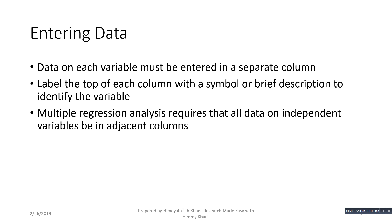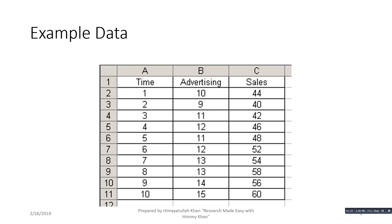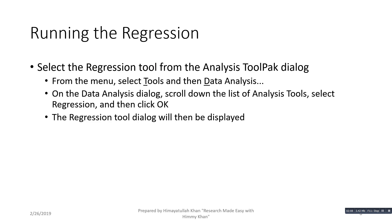Multiple linear regression analysis requires that all the data on independent variables be in adjacent columns. In this Excel worksheet there are two variables. In column A there is time — say yearly data for 10 years. In column B there is advertising expenditure of the firm, and in column C there is the sales revenue. Sales revenue is the dependent variable, while advertising expenditure is the independent variable.